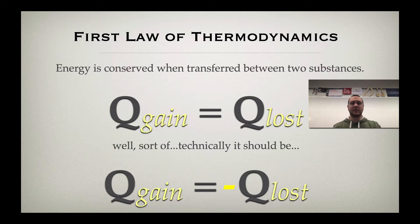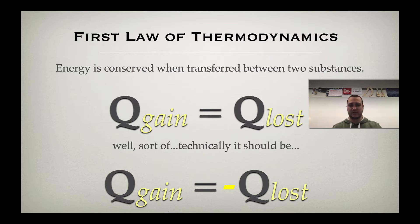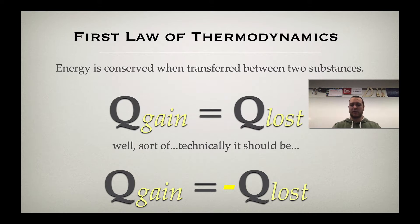So the object that lost thermal energy has to be the object that started at a higher temperature and then became cooler as a result. So again, we have energy transfer from high energy to low energy — from hot temperature to colder temperature — which means gaining energy, you get warmer; losing energy, you get cooler.